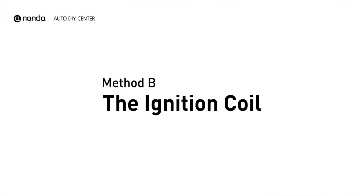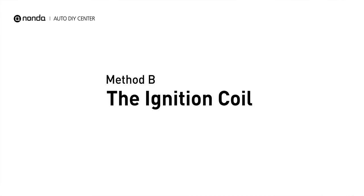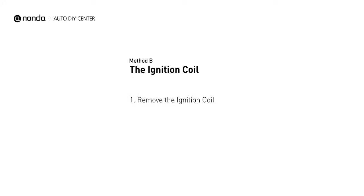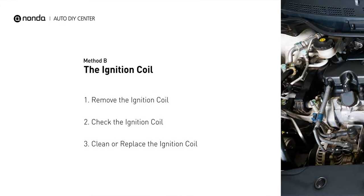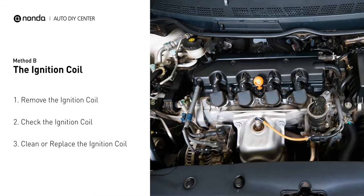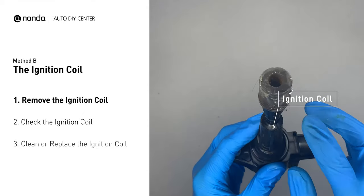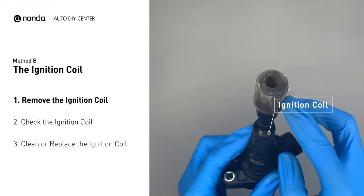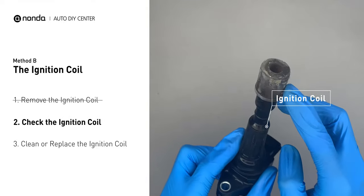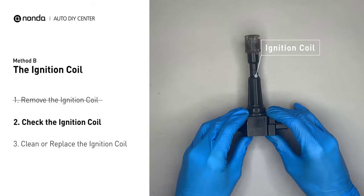Method B: the ignition coil. Ignition coils are usually installed directly at the cylinder head, above the spark plug. First, carefully remove the ignition coil from the engine. Check to see if the ignition coil is either stained or damaged.